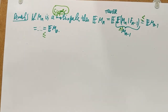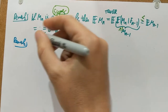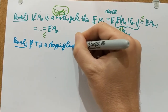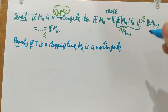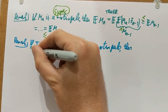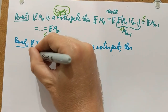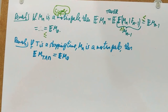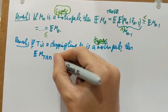The second point is that a stopped martingale is still a martingale. If T is a stopping time and M_N is a martingale, then M_{T∧N} is a martingale — we have seen this in previous videos. Therefore, the expectation of M_{T∧N} is still E[M_0]. If I have a supermartingale, the equality turns into an inequality.